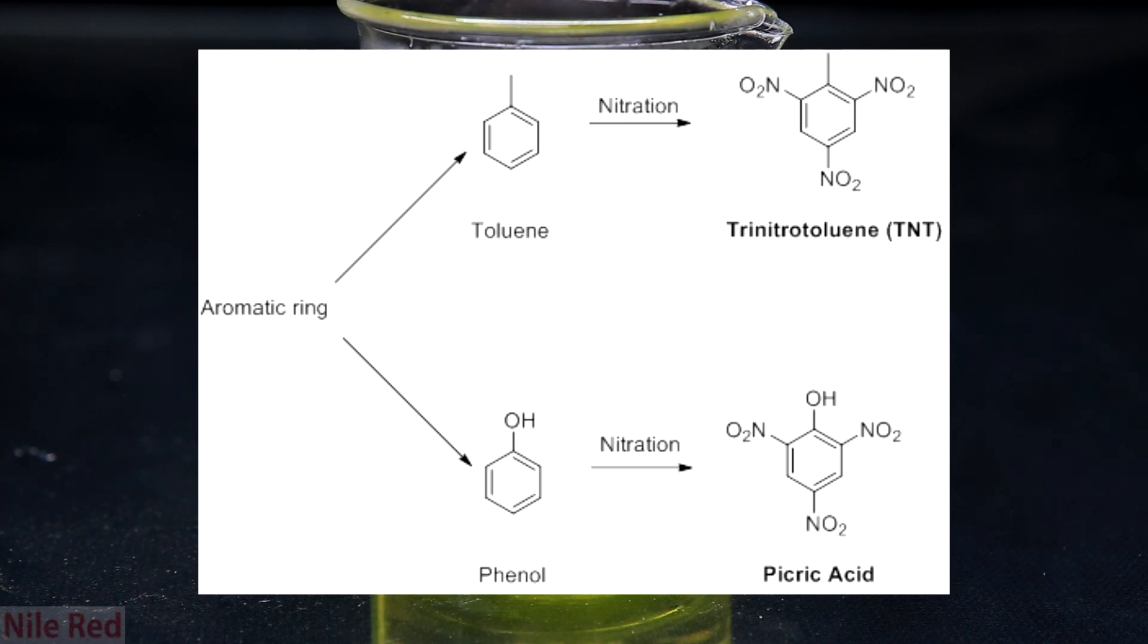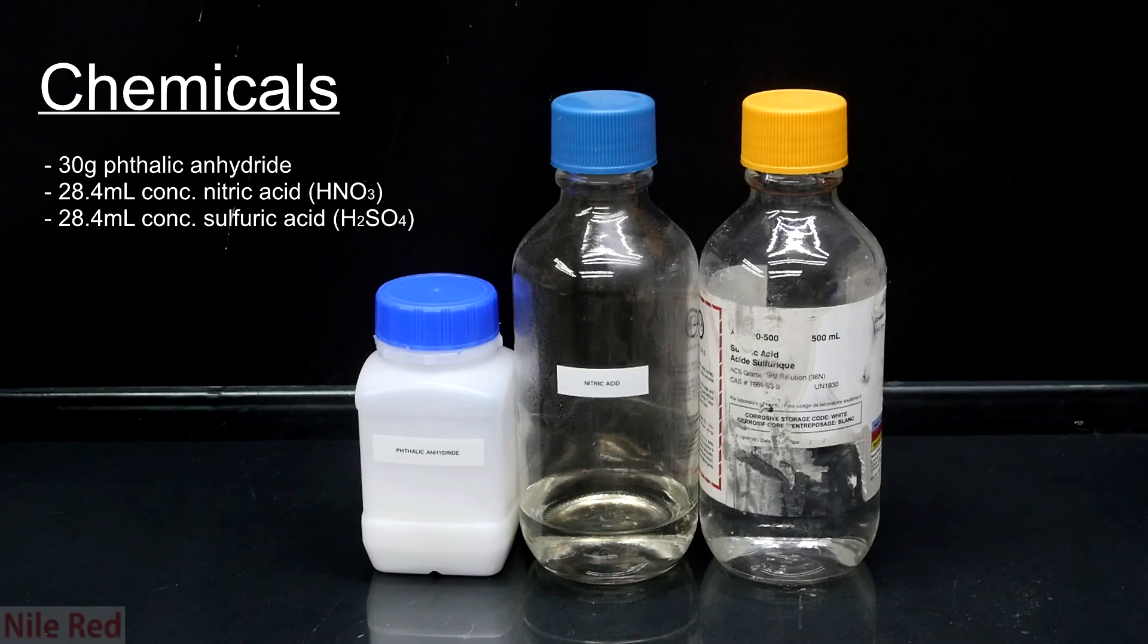Anyway, with no more stalling, we can go over what we need to do this reaction. For this reaction, I used 30 grams of phthalic anhydride and 28.4 milliliters of both concentrated sulfuric acid and concentrated nitric acid. The nitric acid was made by myself at home, the sulfuric acid was distilled from drain cleaner, and the phthalic anhydride was actually purchased.